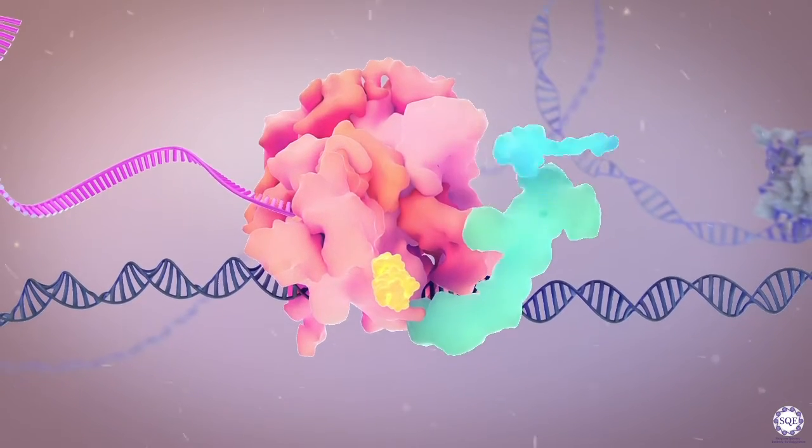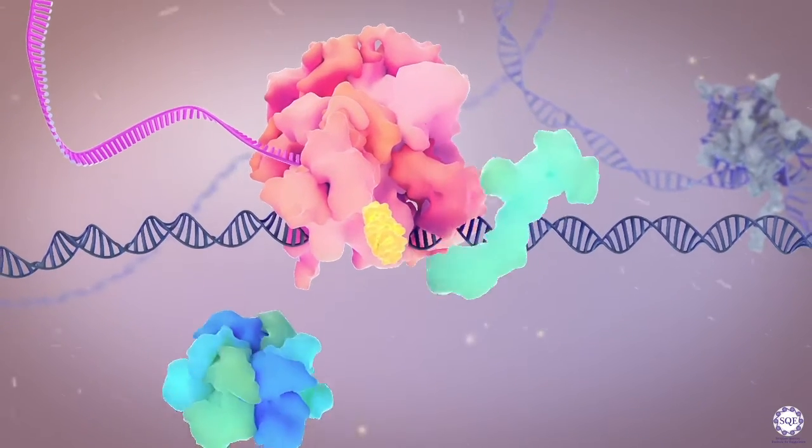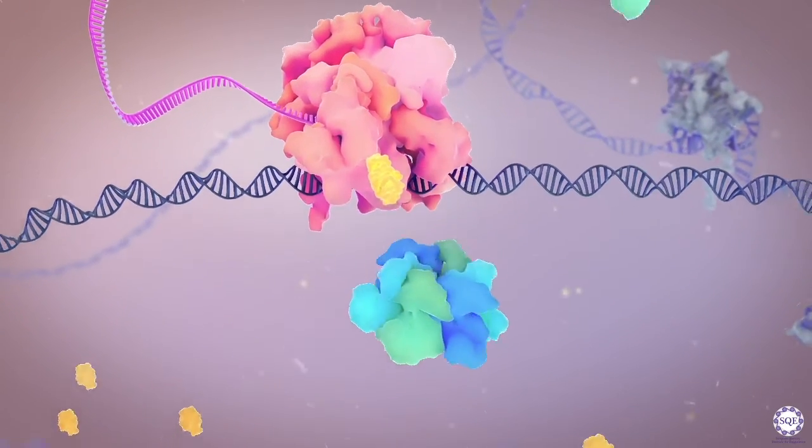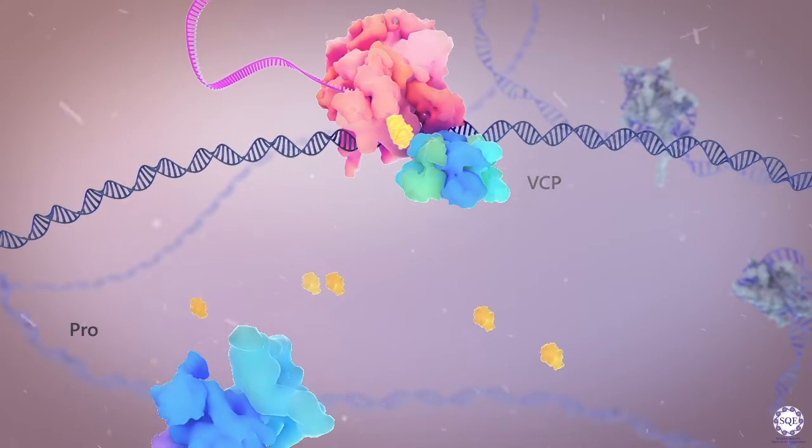The CUL3E3 ligase is involved in the ubiquitination of RPB1 and targets it for degradation by VCP and proteasome.